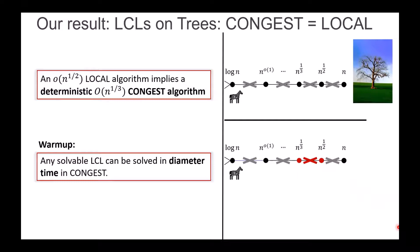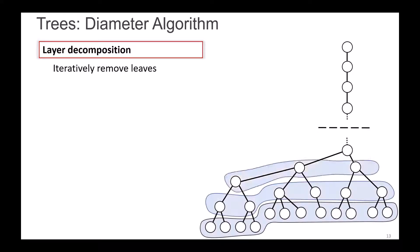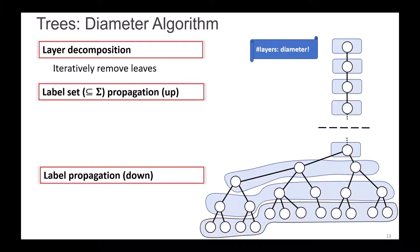Before going into the details, we do a warm-up by showing a simpler result: any solvable LCL can be solved in diameter time in the CONGEST model. In the LOCAL model, you can just gather the whole tree and solve whatever you want. In the CONGEST model it's not immediately clear, but it's also not super difficult. The diameter-time algorithm first decomposes the tree into layers by iteratively removing leaves — placing them in the first layer, removing the new leaves, and so on — yielding a number of layers in the order of the diameter. Then we have two procedures of a dynamic programming flavor.